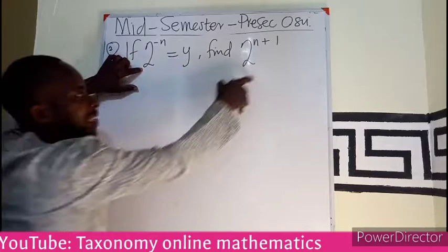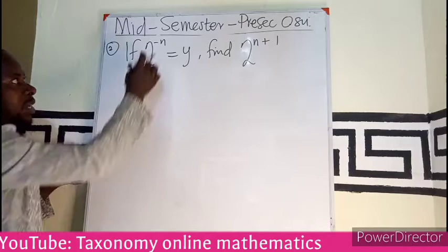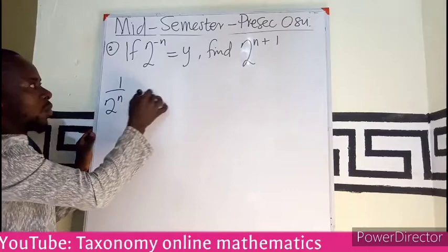So now we know by indices, if I have a negative exponent, it becomes positive by reciprocal. So this is the same as 1 over 2 exponent n, which is equal to y.